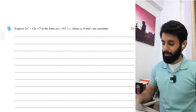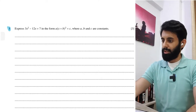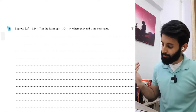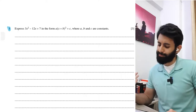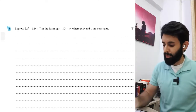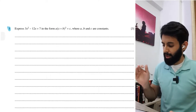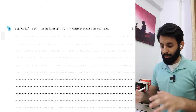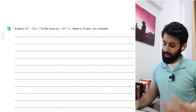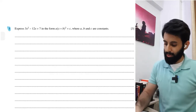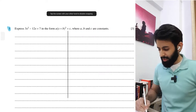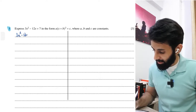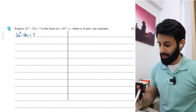Question 1, highlighted blue, deals with completing the square - something we've been doing since O-levels. I've made a detailed video on it which I'd suggest checking out. There are two methods I like to use, and I'll demonstrate both so you can choose your preference. The first method is comparing coefficients. I set 3x² - 12x + 7 identical to a(x + b)² + c and expand the right-hand side.